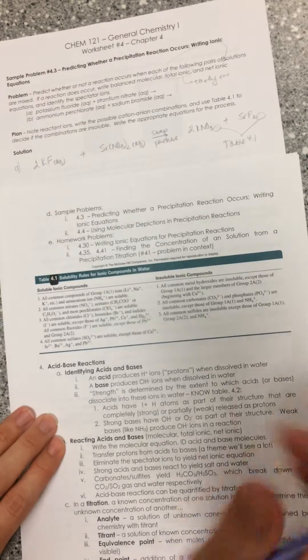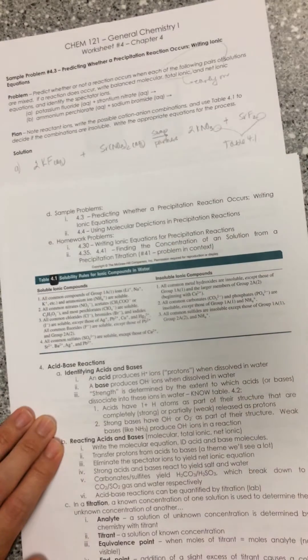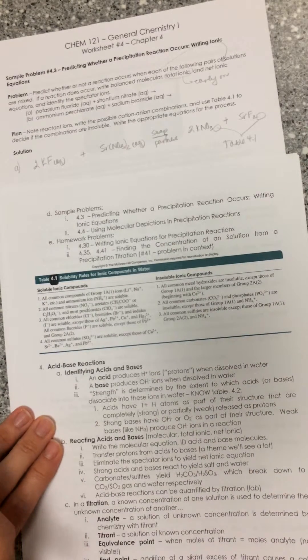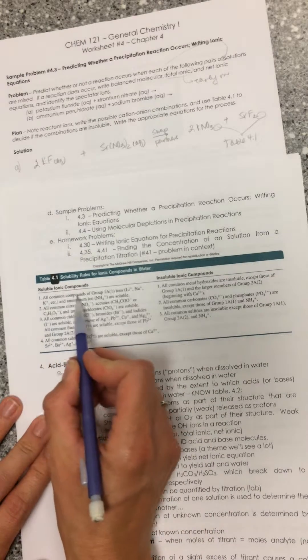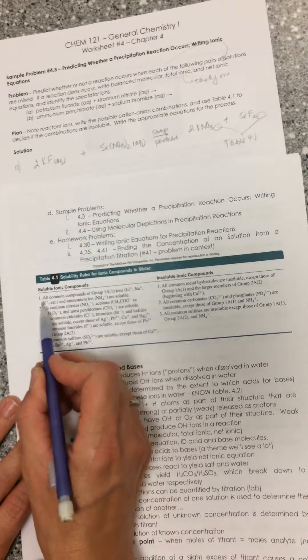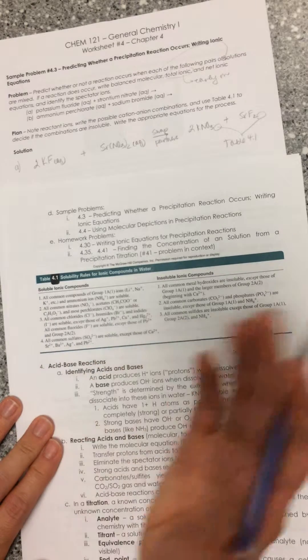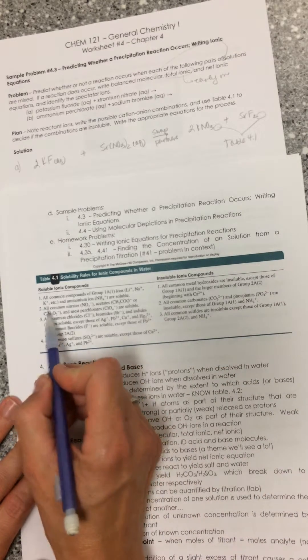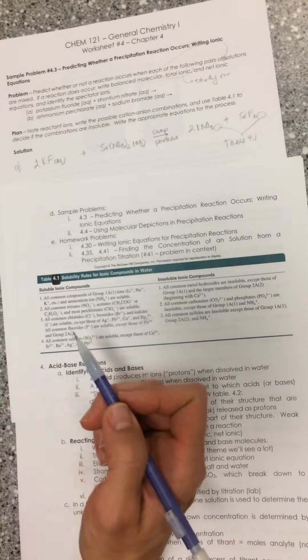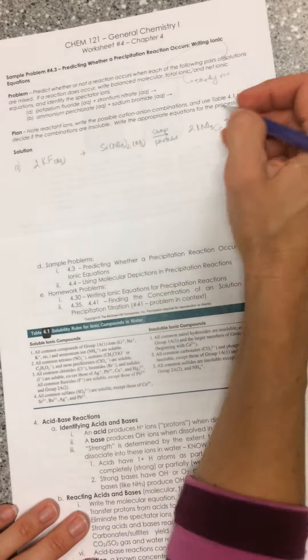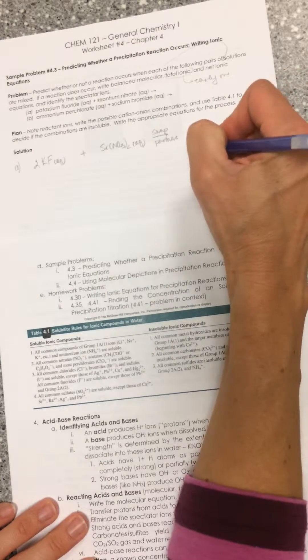We need to use Table 4.1 to determine the states. Potassium nitrate - all common compounds of group 1A ions like potassium are soluble. If we looked up nitrates as well, most nitrate salts are soluble. That's a win-win combination, so this will be aqueous.